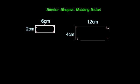If we look at these two rectangles, they are similar — one is an enlargement of the other. All four angles in each rectangle are right angles.